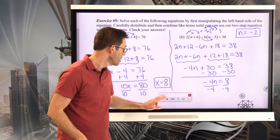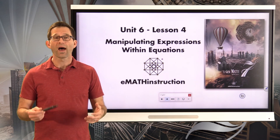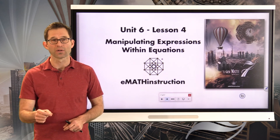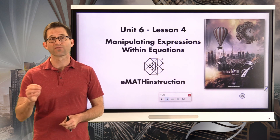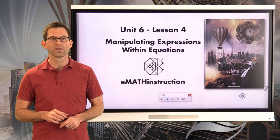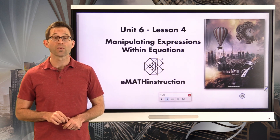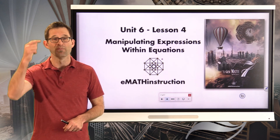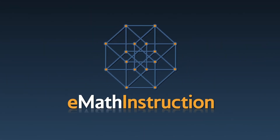We didn't learn any new equation solving techniques today — we only solved two-step equations. The key was that we had to do some manipulation, like in Unit 5, before we could even have a two-step equation. We used the distributive property and combined like terms a lot. In the next lesson, we'll look at the structure of an equation to maybe take some shortcuts. Thank you for joining me for another NGenMath 7 lesson by EMath Instruction. My name is Kirk Weiler — until next time, keep thinking and keep solving problems.